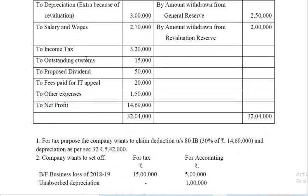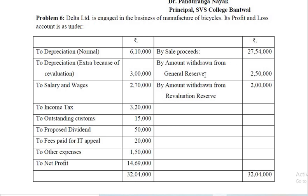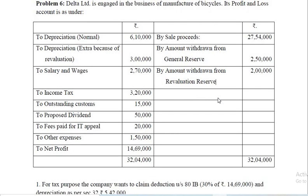Salary and wages are allowed. Income tax is not allowed. Outstanding customs duty is not allowed — it should be added. Proposed dividend should also be added. Fees paid for IT appeal are allowed. Other expenses — nothing in the adjustments — so entire amount is allowed. On the credit side: amount withdrawn from general reserve should be deducted from net profit while computing business income. Similarly, amount withdrawn from revaluation reserve should be deducted while computing business income.